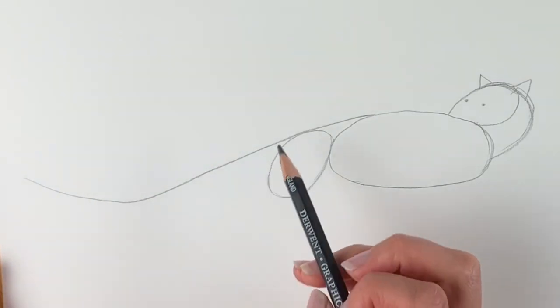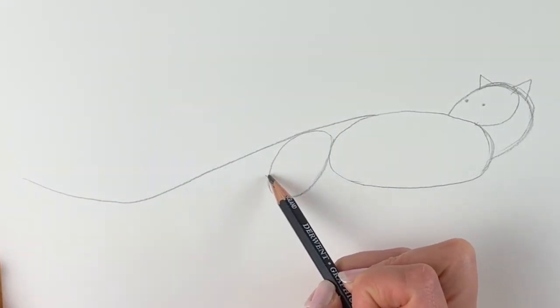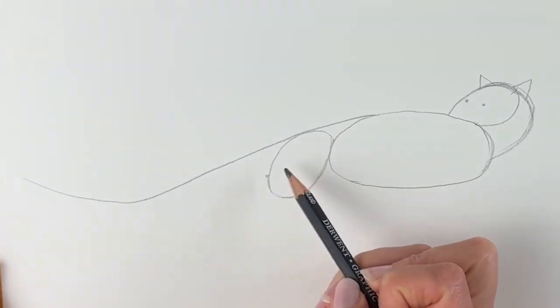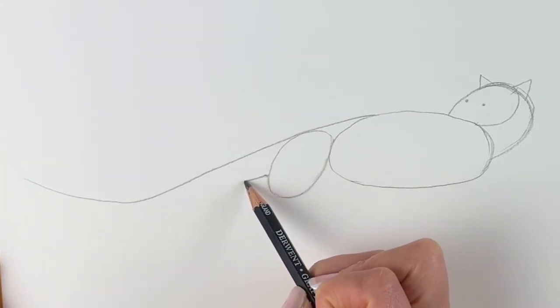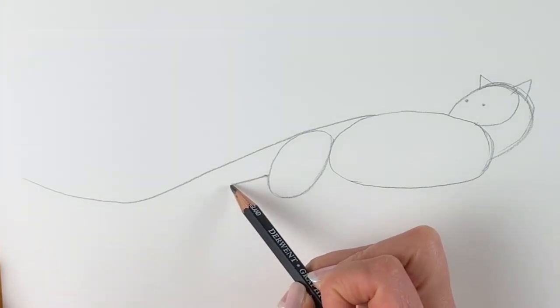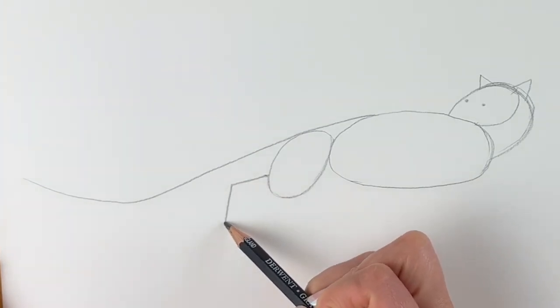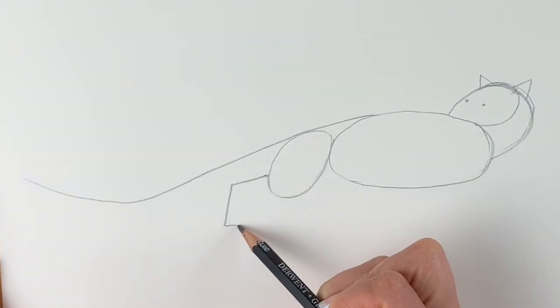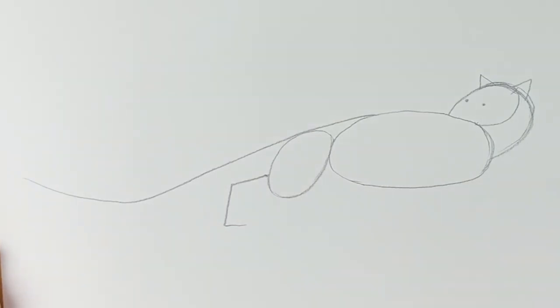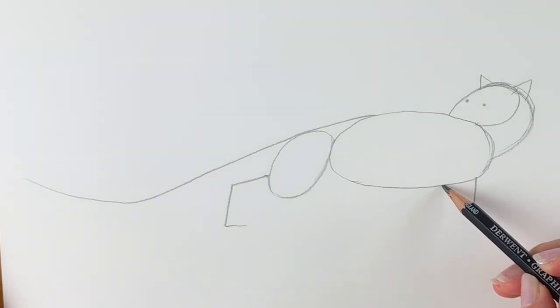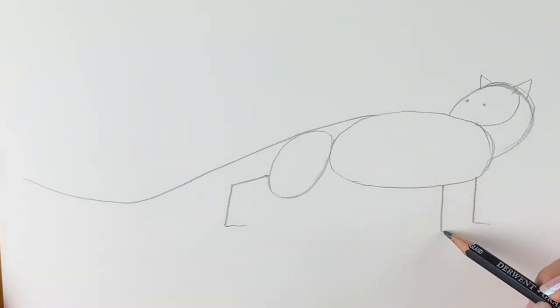We're going to draw the back leg now, so just starting here at the bottom left hand side of this oval shape, draw a line going to the left just a little way, then you'll come down just a little way and to the right. Now the front legs, so coming out from here, draw a line coming down and across, and the same next to it, one coming down and across.